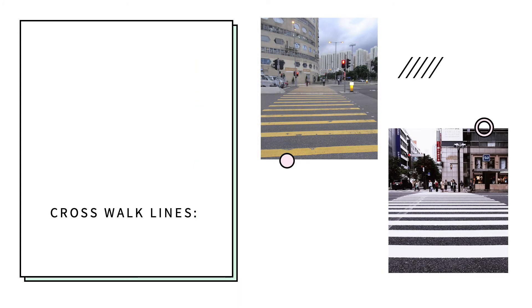Crosswalks are marked with stripes of yellow or white lines across the road. They designate the areas that allow for pedestrians to cross.